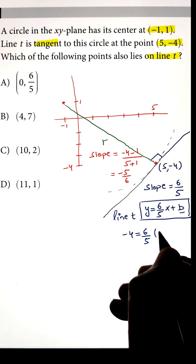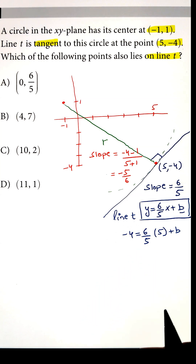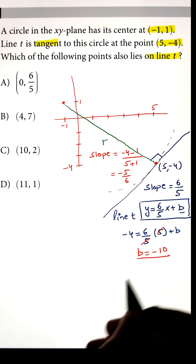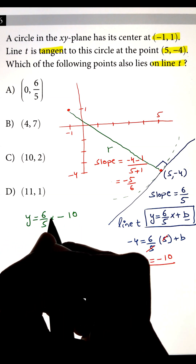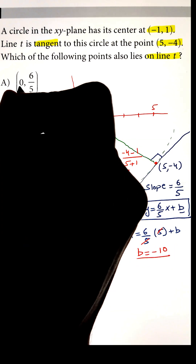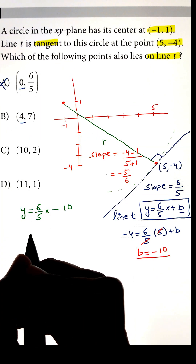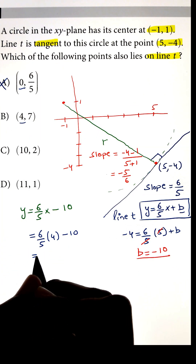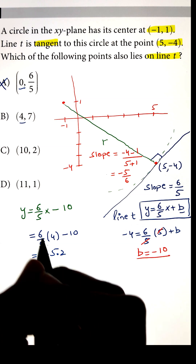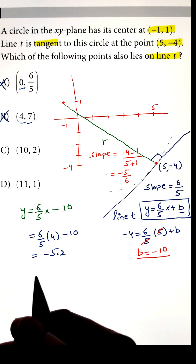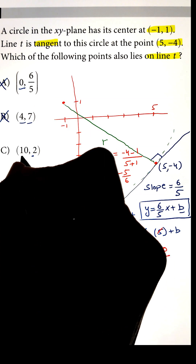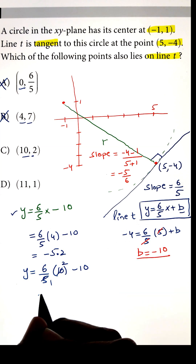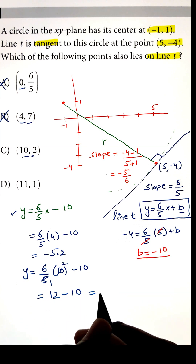Finally, we can plug in the x-values to see if they match y for the four given points. For point A, plugging in x equals 0 gives y equals negative 10, so that won't be our correct answer. Next, plugging in x equals 4 gives y equals negative 5.2, which is also incorrect. Finally, plugging in x equals 10 gives y equals 2, so point C lies on line t.